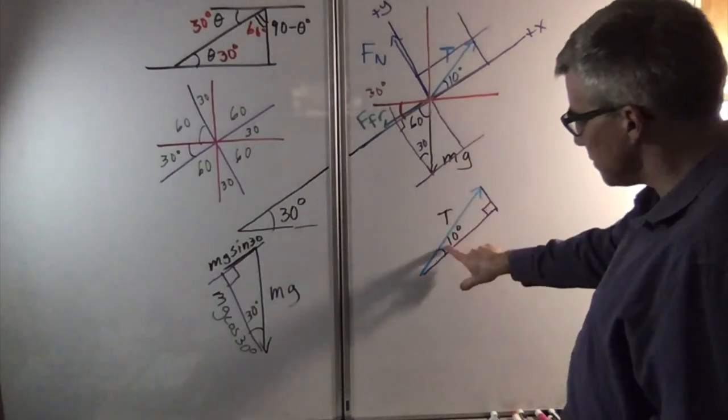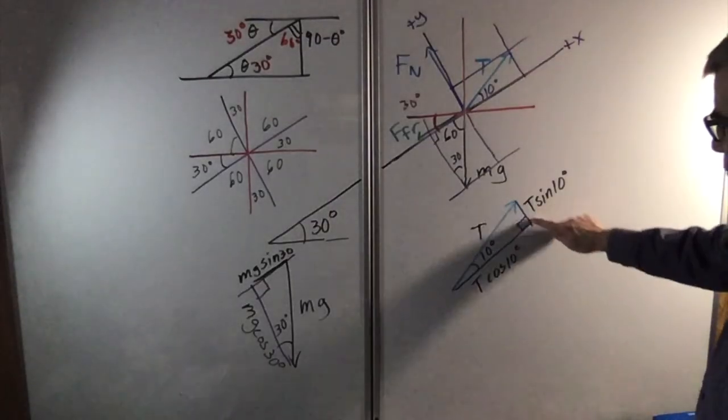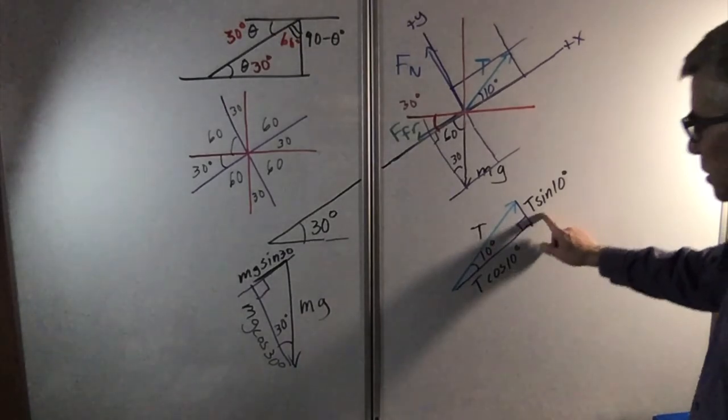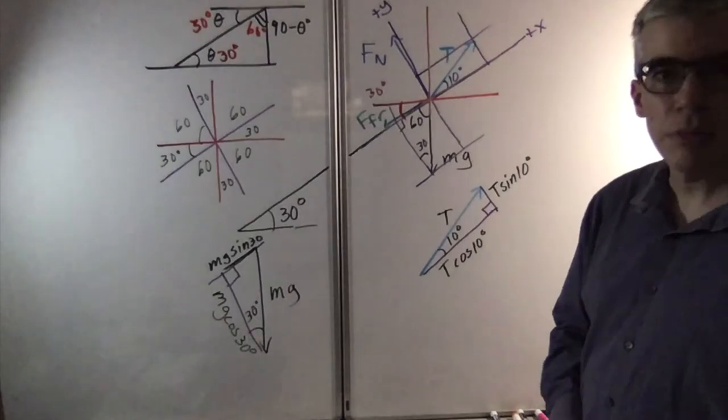Meanwhile, this is T, this is 10, this is the opposite. So we have T sine 10 degrees, there's T cosine 10 degrees. Those are the components. And there you go.